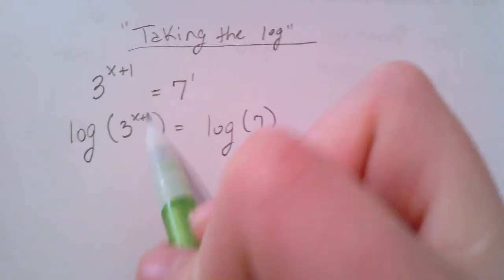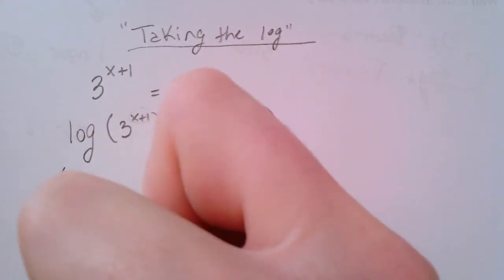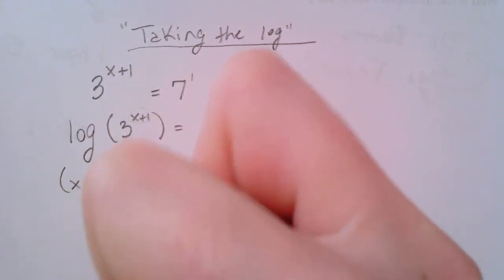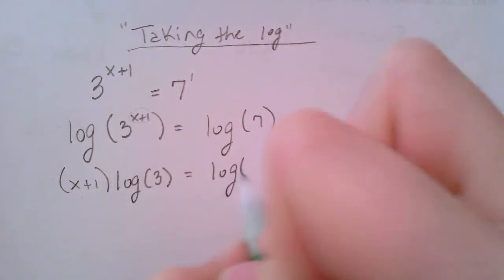OK, so I'm going to invoke my exponent rules where the x+1 comes down in front. (x+1) times log(3) is equal to log(7).